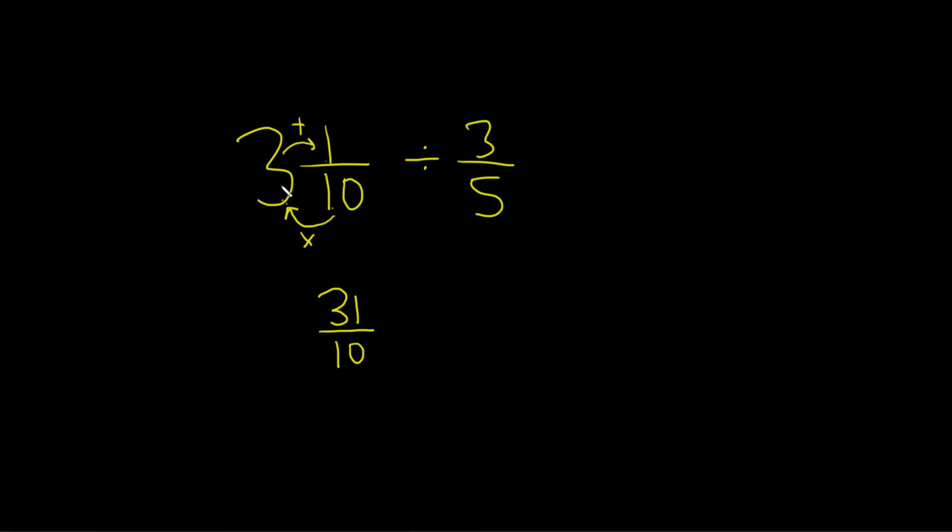Again, you multiply the 10 and the 3. That gives you 30. Then you add the 1, and that gives you 31. Then you write it all over 10. And this is divided by 3 over 5.